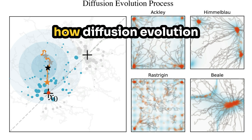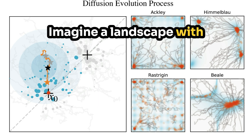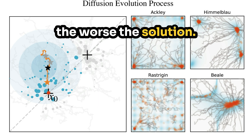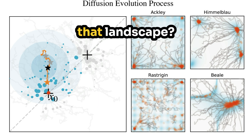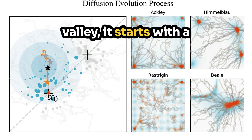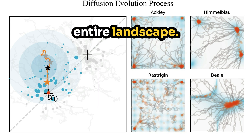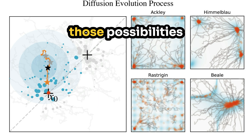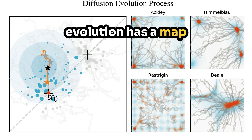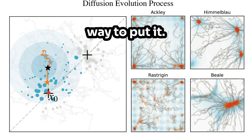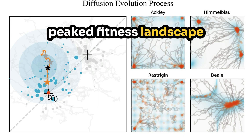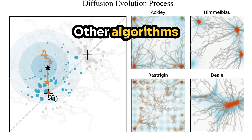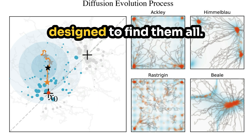Imagine a landscape with mountains and valleys. The higher the mountain, the worse the solution; the lower the valley, the better the solution. We call this the fitness landscape. Instead of randomly searching for the lowest valley, Diffusion Evolution starts with a cloud of possibilities spread across the entire landscape, then uses Bayes' theorem to refine those possibilities over time, pulling the cloud down towards the best solutions. Figure 2 in the paper illustrates this — it shows how Diffusion Evolution explores a two-peaked fitness landscape and ultimately finds both optimal solutions, while other algorithms might only find one.